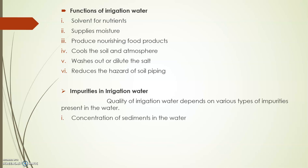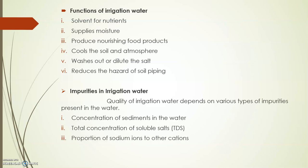The first impurity is the concentration of sediments, also called total concentration of soluble salts — in large amounts this reduces the permeability of the soil. The second is the proportion of sodium ions to other cations, measured as ESP (exchangeable sodium percentage). Based on ESP and SAR (sodium absorption ratio) values, different classifications have been made, which we will discuss in detail.